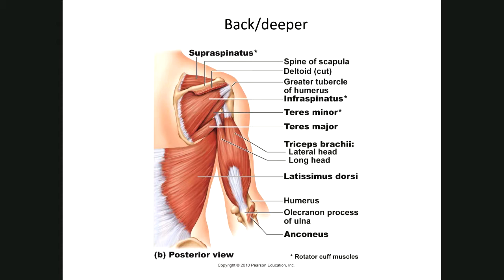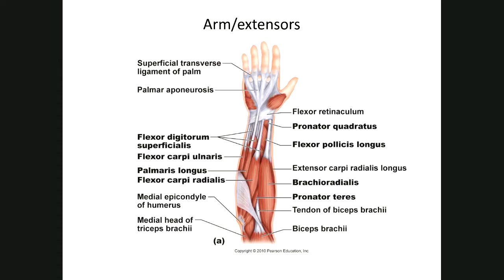If you want to flex your elbow you use your biceps; if you want to extend it you use your triceps. We're not going to go into tremendous detail on the hand muscles, but brachioradialis is here, and these are your flexor muscles that flex your carpus and digits.